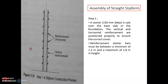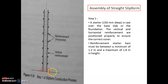In the first step, you can see there is a kicker, also called a starter. This kicker is 150 mm deep and is cast over the base slab or foundation. Once the kicker or starter is cast on the base slab, you can go for positioning the vertical and horizontal reinforcement.